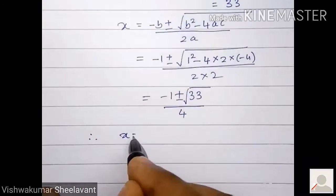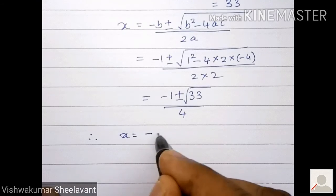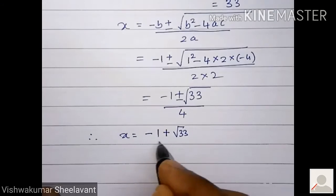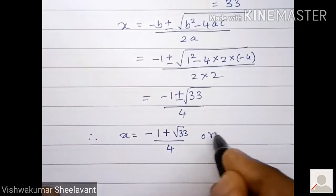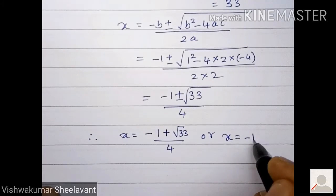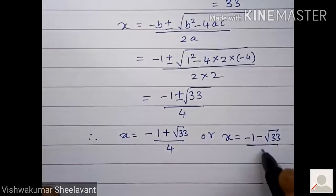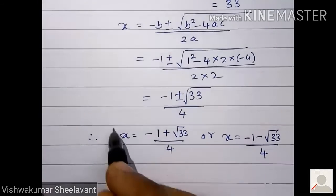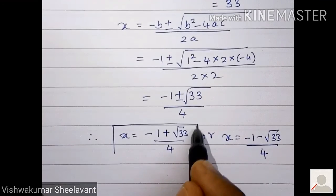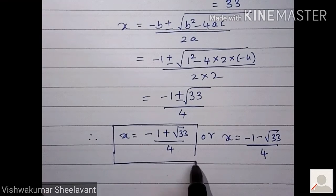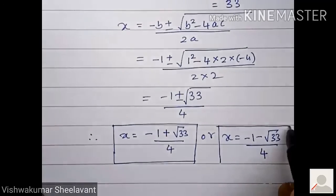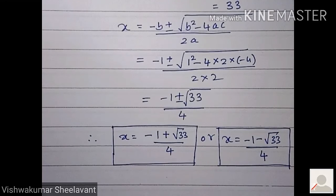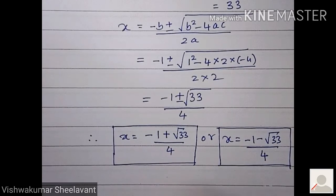Therefore, x is equal to minus 1 plus root 33 by 4, or x is equal to minus 1 minus root 33 by 4.